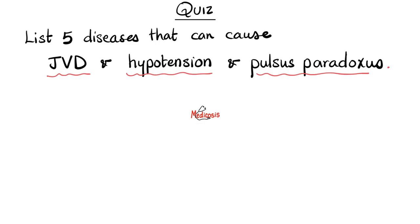The next question: list diseases that cause jugular venous distension, hypotension, and pulsus paradoxus together. Here are eight: (1) cardiac tamponade, (2) constrictive pericarditis, (3) pericarditis with effusion, (4) restrictive cardiomyopathy, (5) right ventricular infarction, (6) biventricular heart failure, (7) pulmonary embolism, and (8) exacerbation of COPD or asthma.